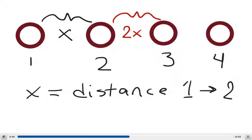And then we're told that the distance between hole 3 and 4 is the same as the distance between hole 2 and 3. So we're told that this is the same as this distance here. So then this would be 2x.